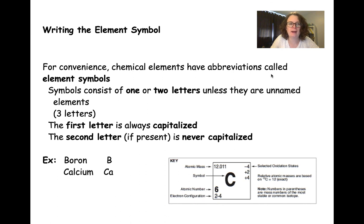We'll start with writing the element symbol. For convenience, chemical elements have abbreviations called element symbols, which are much easier to write than the full name of our element. The symbols consist of one or two letters, unless they are unnamed elements, which have three letters. It takes quite a while to decide on a name for an element if it's been recently discovered, so we have this three-letter designation while we wait for the name to be decided upon.